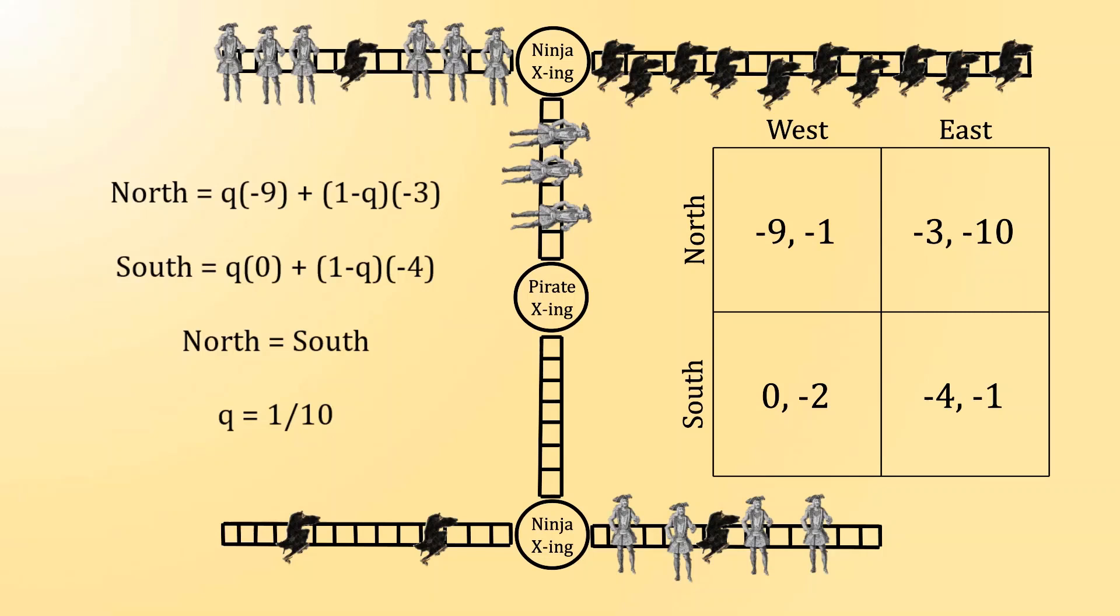Instead, the ninja is designing his strategy to punish the pirate for the temptation to go south. And if you look at the bottom here, there are 4 pirates to the east, and no pirates to the west. Thus, by playing east more often, the ninja is punishing the pirate for that temptation to go south.